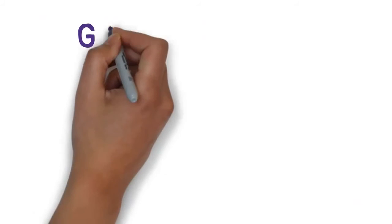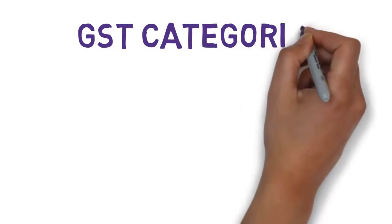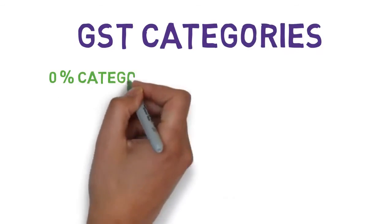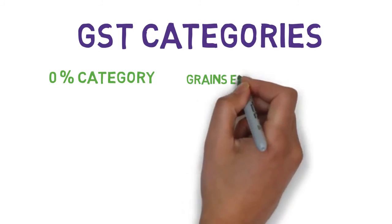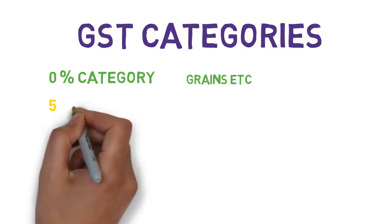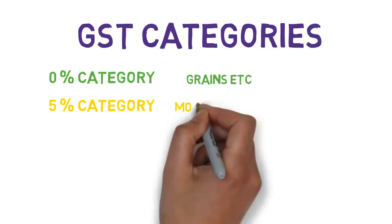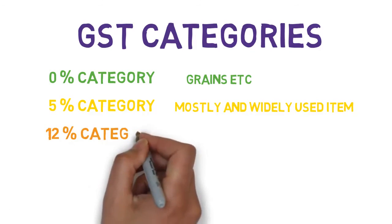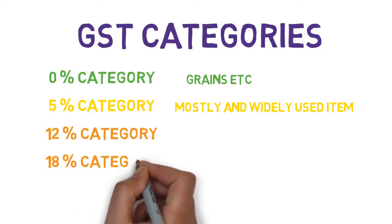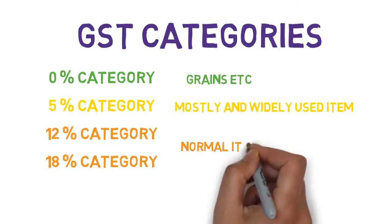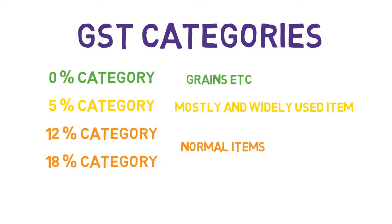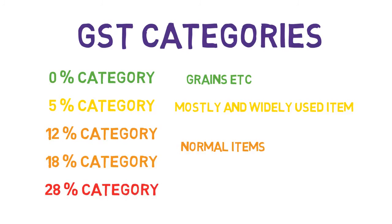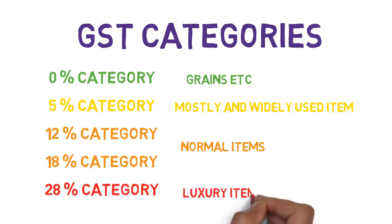We will also have 5 rate categories under GST in India. The 0% category applies on food grains and similar essentials. The 5% category applies on mostly widely-used items. The 12% and 18% categories apply on items which are normally used. The 28% category applies on luxurious items.